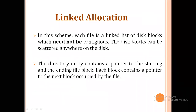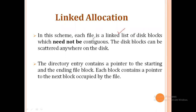Now we come to the second method: linked allocation. In this scheme, each file is a linked list of disk blocks which need not be contiguous. The blocks are randomly scattered on the disk. Each block is linked via a linked list, and the directory entry contains a pointer to the starting and ending location of the file.